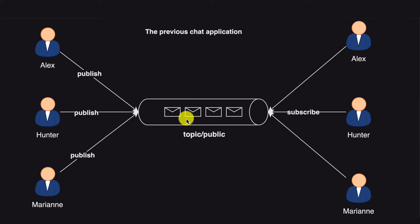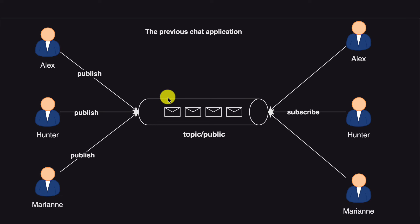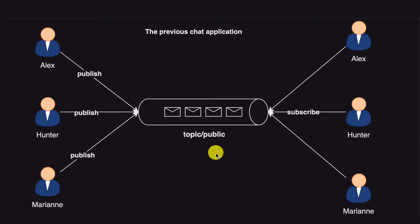In the previous tutorial about Spring Boot and WebSockets, we built a chat application, but it was a bit specific — everyone was publishing to the same queue and everyone was subscribed to the same queue. This means a message sent by Alex would be seen by Hunter and Marianne too. Every time a new user connects, all users are notified and see all messages from everyone, which is fine for a public or general chat.